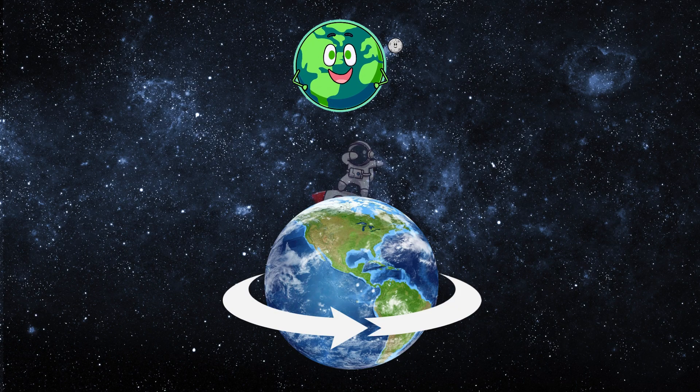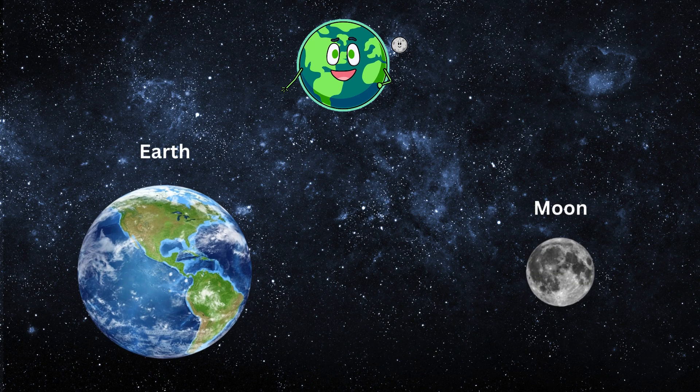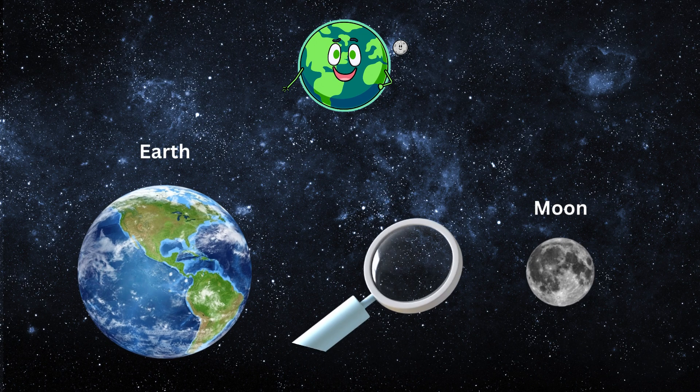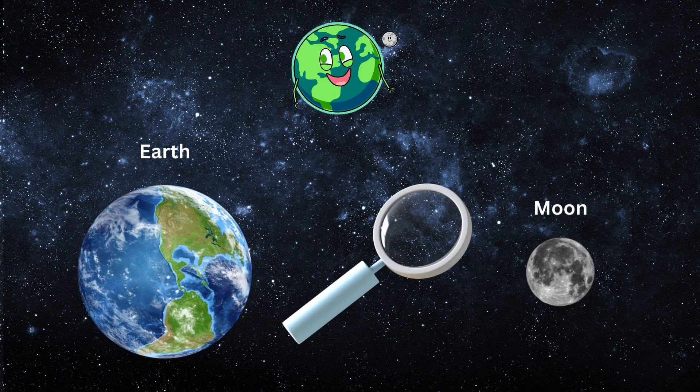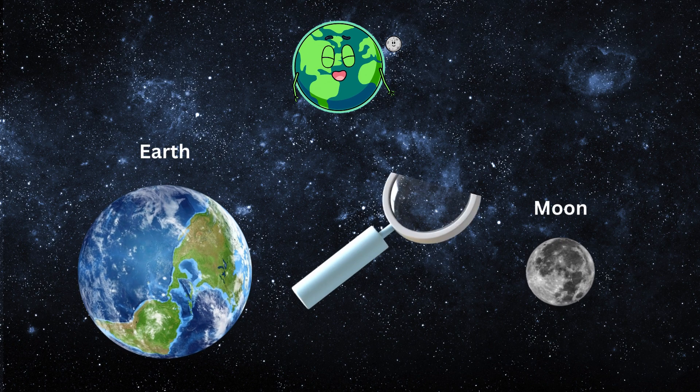That's like going all the way around the Earth almost 10 times. Even though the Moon looks small in the sky, it's actually pretty big. But why does it look so tiny from Earth? That's because it's so far away.